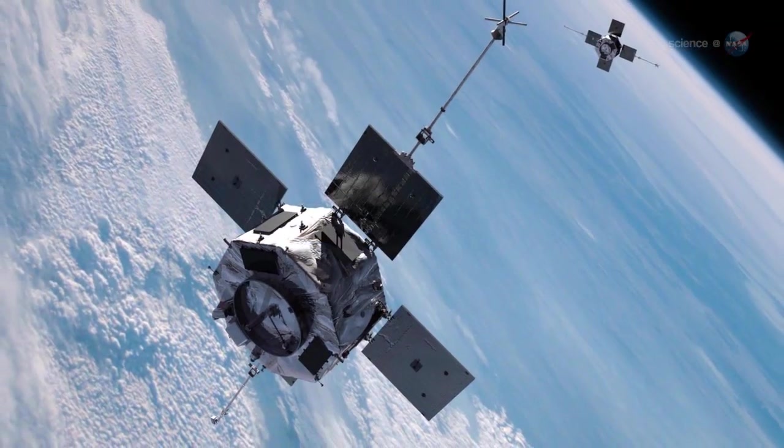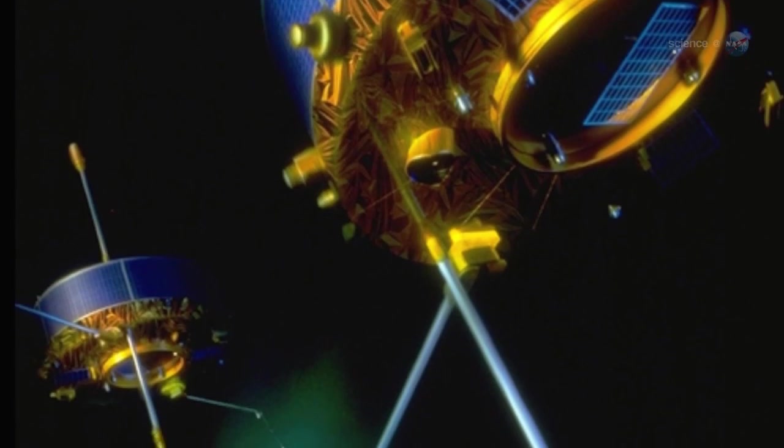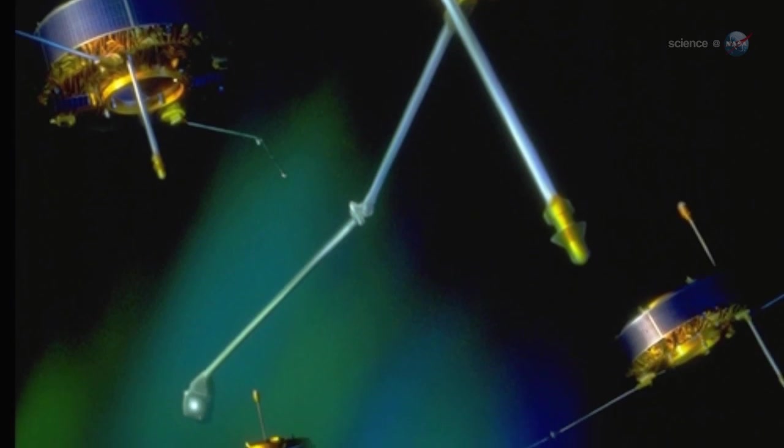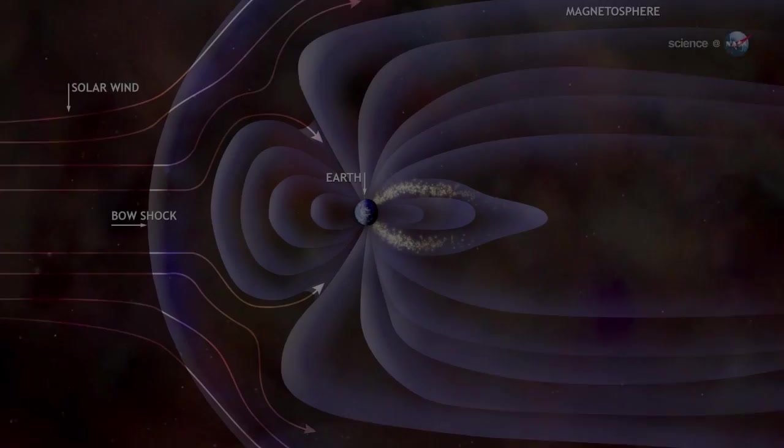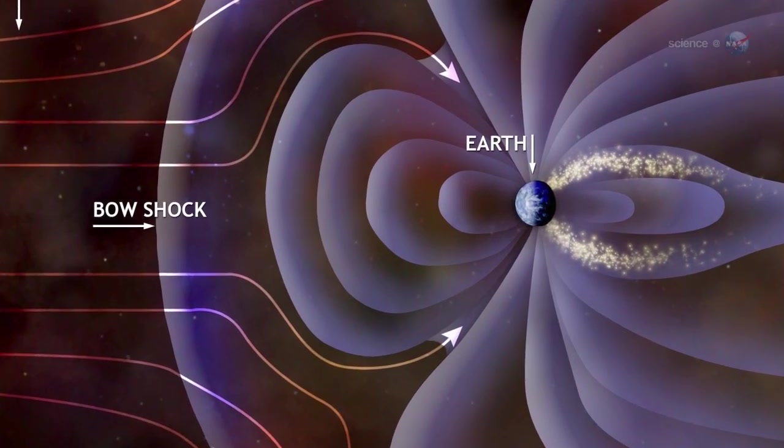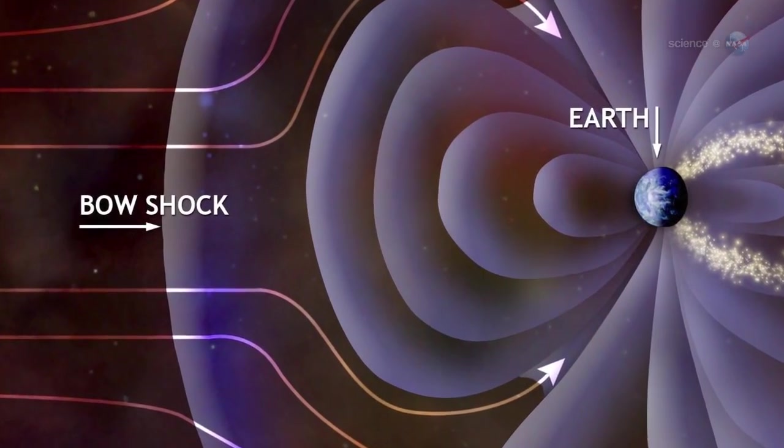Observations by NASA's Themis spacecraft and Europe's cluster probes suggest that these magnetic portals open and close dozens of times each day. They're typically located a few tens of thousands of kilometers from Earth, where the geomagnetic field meets the onrushing solar wind.